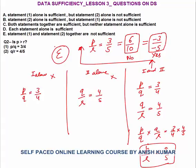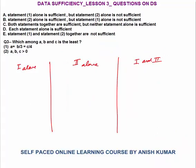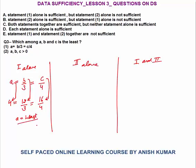Question 3: Which among a, b, c is the least? Statement 1 alone: a equals b/3 equals c/4. Take an example — make everything equal to 4: a = 4, b = 12, c = 16. So a is the least. But nothing is given about a, b, c being positive or negative, so they could be negative.